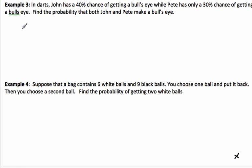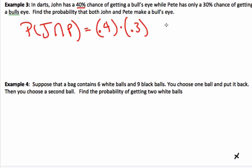An example: In darts, John has a 40% chance of getting a bullseye while Pete only has a 30% chance of getting a bullseye. Find the probability that both of them make a bullseye. Well, that's going to be the probability that John gets the bullseye and that Pete gets the bullseye. I can then multiply 0.4 times 0.3 and get 0.12. So the probability that they both get a bullseye is 12%. I multiply them because they are independent.